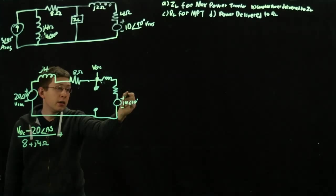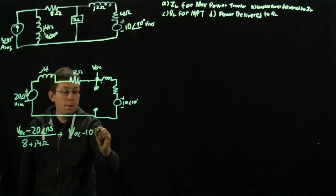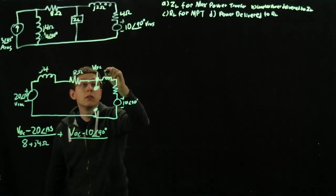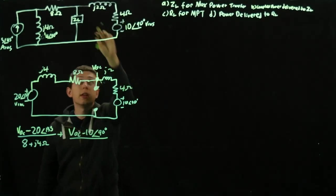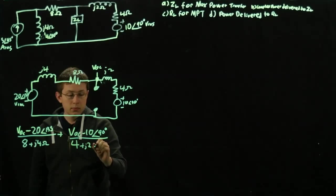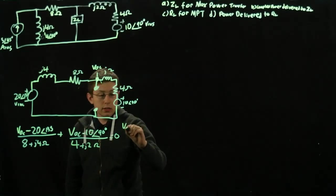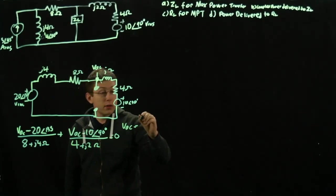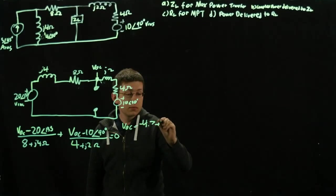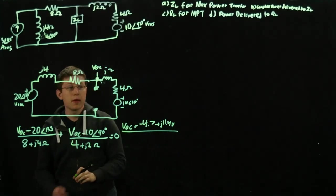Plus this half, VOC minus 10 at 90 degrees over 4 plus J2 ohms. And that all equals zero. You do your multiplication out and you find that VOC equals negative 4.7 plus J11.4 volts. There's our first half of our Thevenin analysis done.